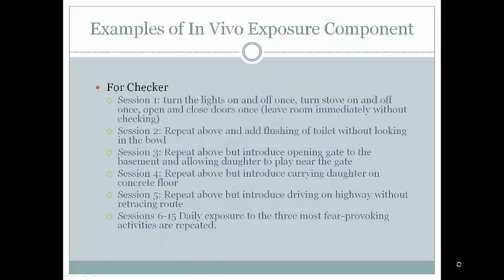For a checker, in vivo exposure might look like: Session 1 — turn lights on and off once, turn the stove on and off once, close doors once, and leave the room immediately without checking. Session 2 — add flushing the toilet without looking in the bowl. Session 3 — open and close the basement gate with the daughter nearby. Session 4 — carry the daughter on the concrete floor. Session 5 — drive on a highway without retracing the route, since checkers often fear having run someone over. Sessions 6-15 — daily exposures to the three most fear-provoking activities.